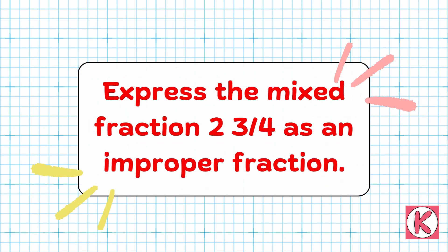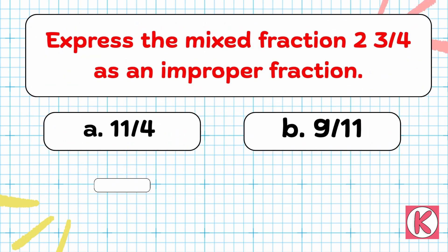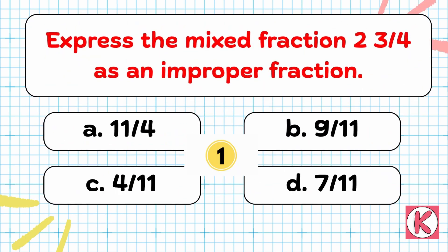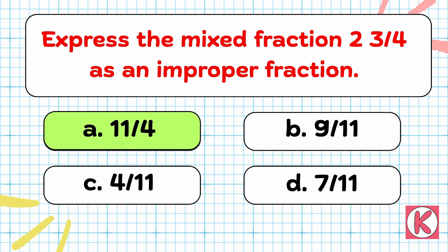Next question. Express the mixed fraction 2, 3 by 4 as an improper fraction. Right answer: Option A — 11 by 4.